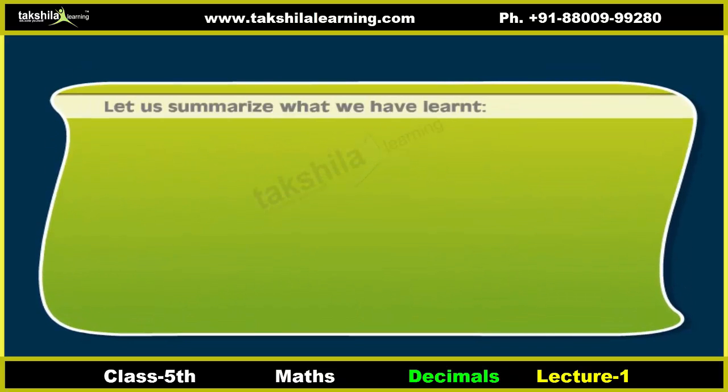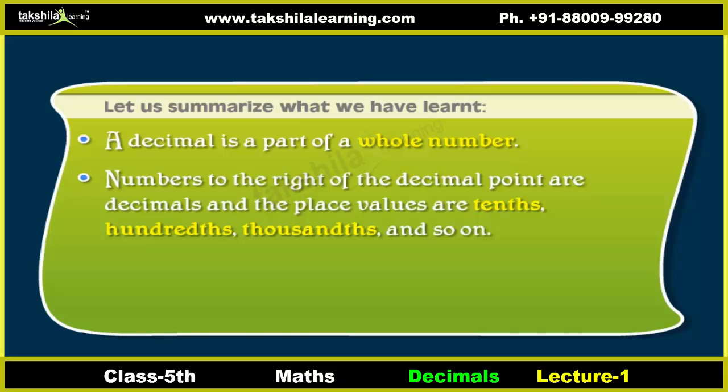Let us summarize what we have learned. A decimal is a part of a whole number. Numbers to the right of the decimal point are decimals, and the place values are tenths, hundredths, thousandths, and so on.